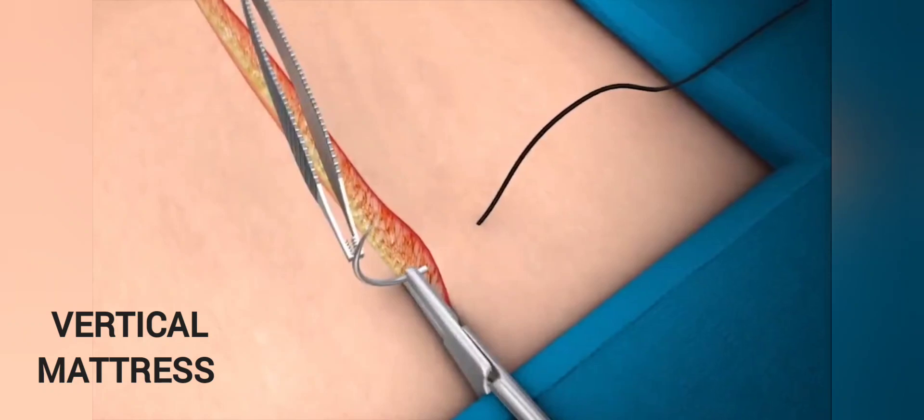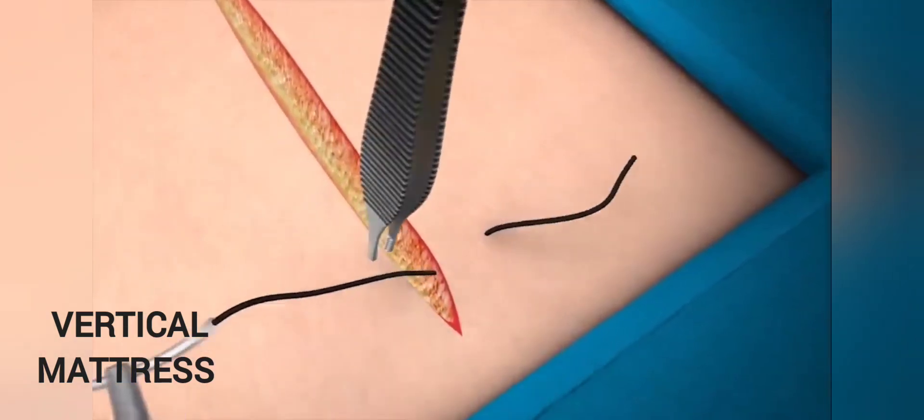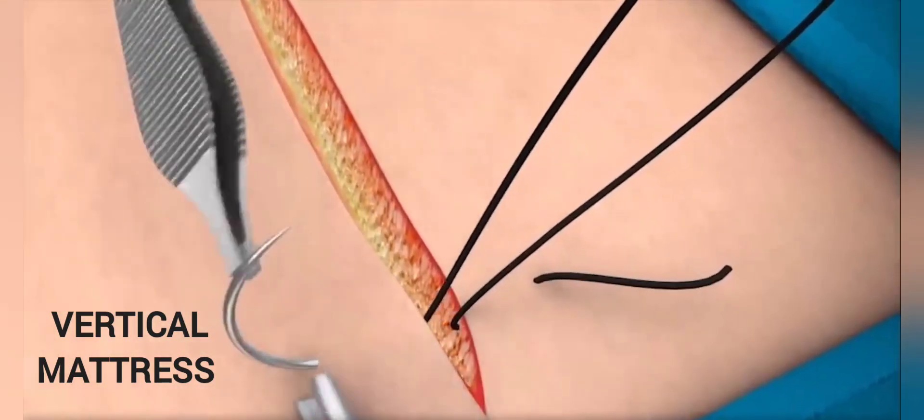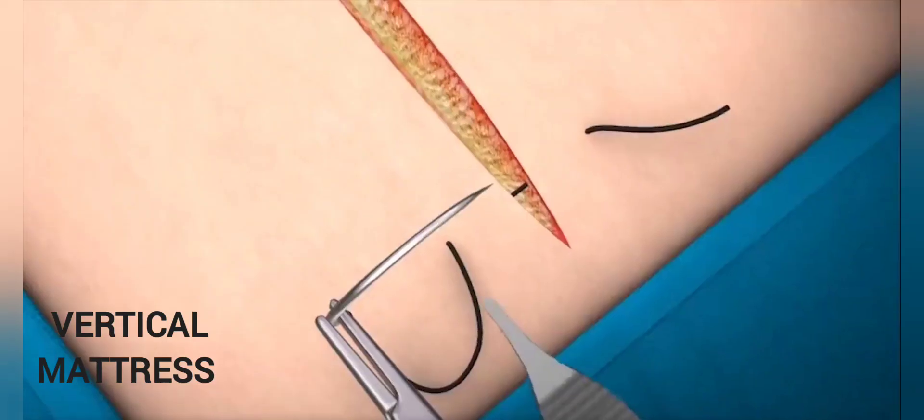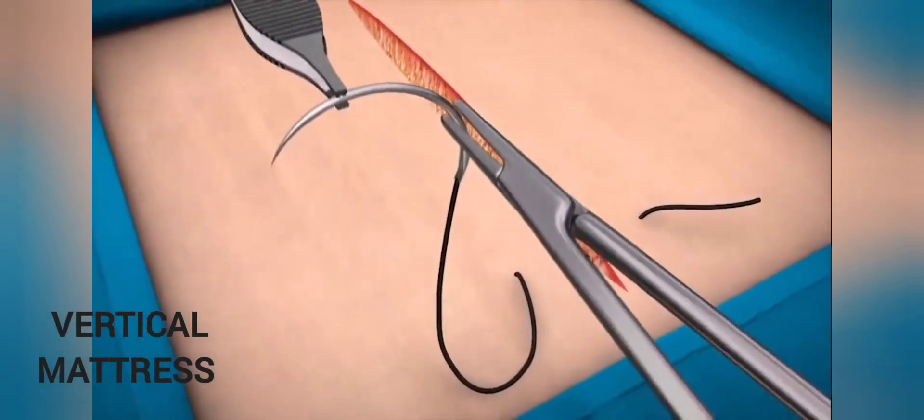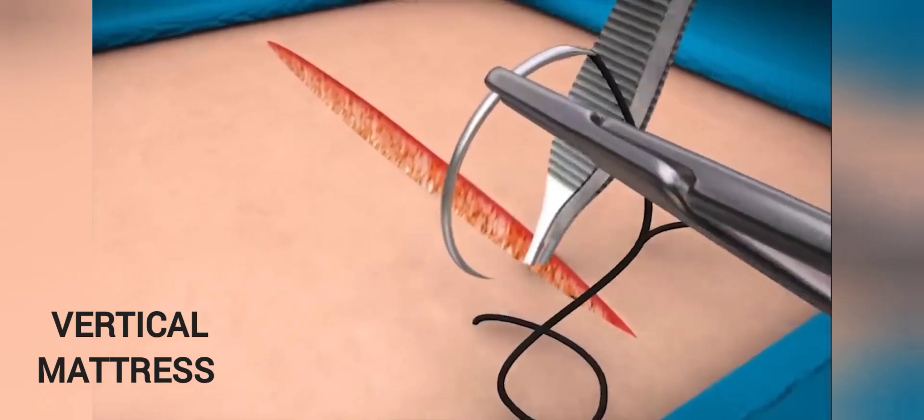Pick up the needle with the forceps and remount it on the needle holders in the correct position and pass it through the opposite wound edge, taking an equally sized bite. Hold the needle with the forceps and rotate it in the needle holder to prepare for the backhand part of the mattress suture.